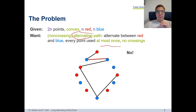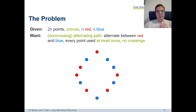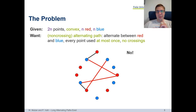Let's see a few examples to understand the definition. Here we see a path on the point set, but it's not an alternating path because it connects two blue points, which is not allowed. Here we have a path which is alternating — it switches between red and blue — but it is not non-crossing because some edges cross. And here we have a path that fulfills all the criteria: it's alternating, non-crossing, and it is a path.